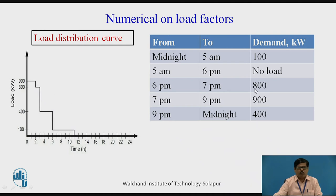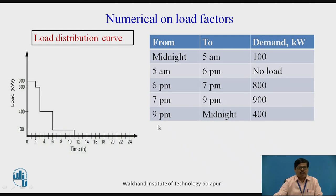Then the next lesser load was 800 KW from 6 PM to 7 PM, so for 1 hour I have drawn the horizontal line for 800 KW — after 900 KW, the load taken was 800 KW, that is in decreasing order. After that, the load of 400 KW from 9 PM to midnight is plotted for its time period. Then the load falls to 100 KW from midnight to 5 AM, so 100 KW is plotted for around 5 hours. This is how we arrange the loads in decreasing order to obtain the load duration curve. There is no load for the remaining period, so the further period is shown without any load.